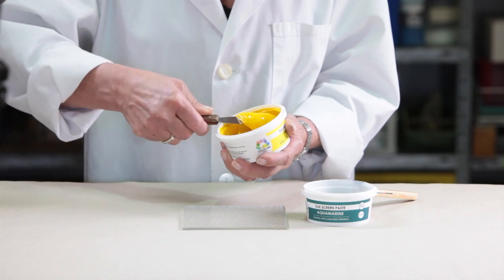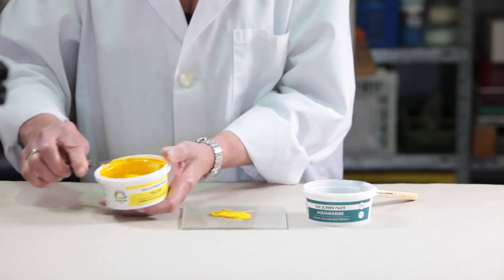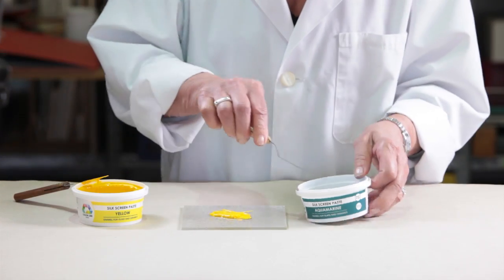For example, if we take some yellow and add a very small amount of aquamarine, the result is a fantastic lime green.